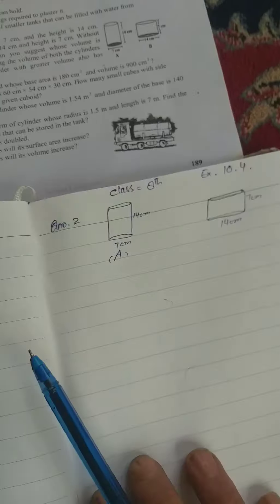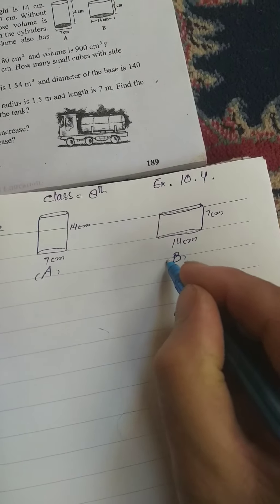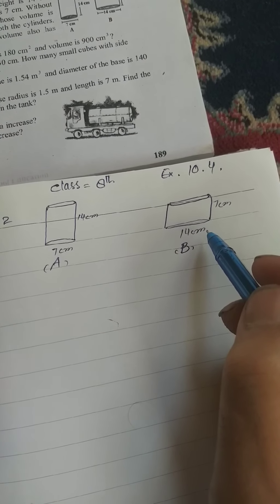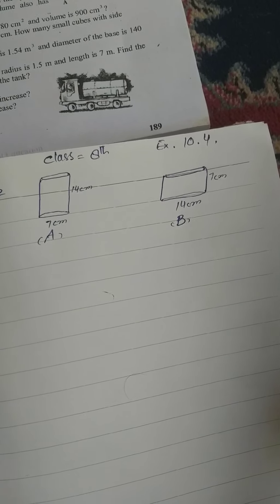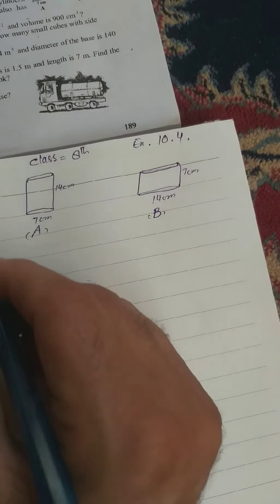Here we have two cylinders, cylinder A and cylinder B. Cylinder A and cylinder B volume and surface area will be taken. Then we have to see which volume is more and which surface area will be more. First of all, we will find the volume of cylinder A.